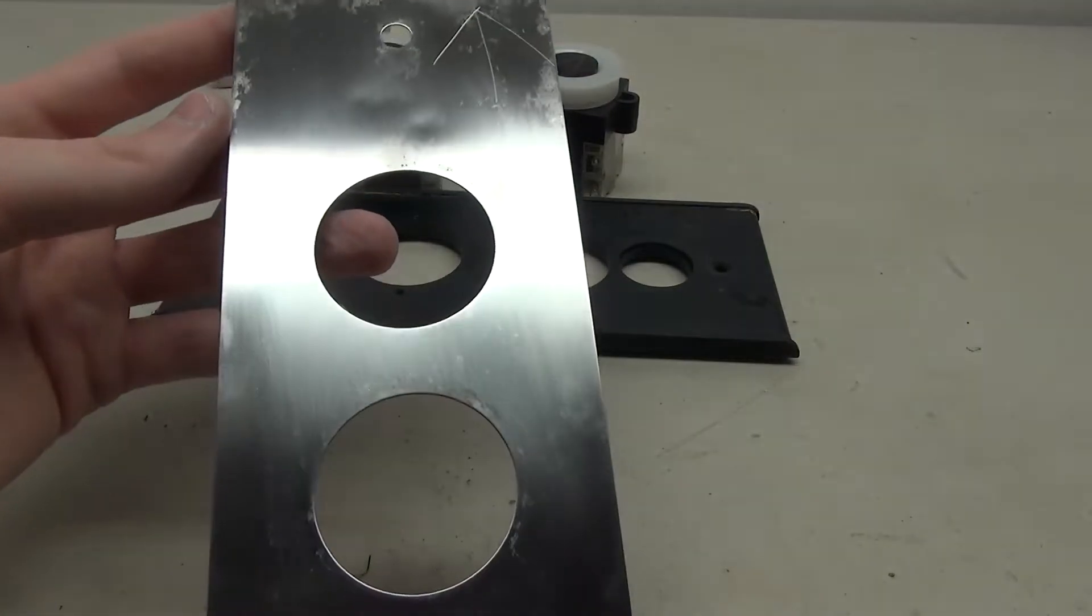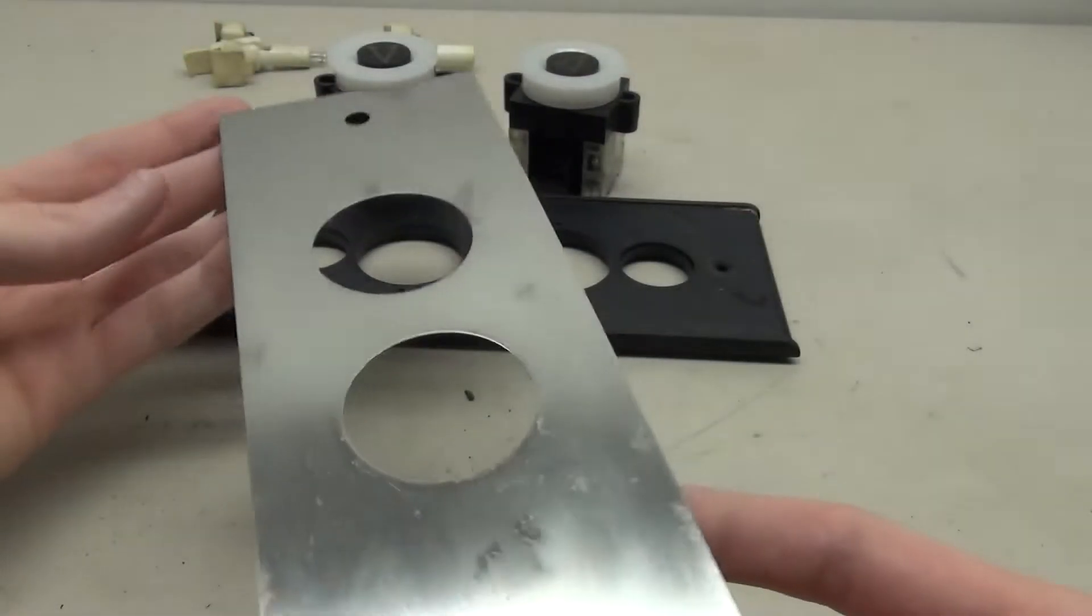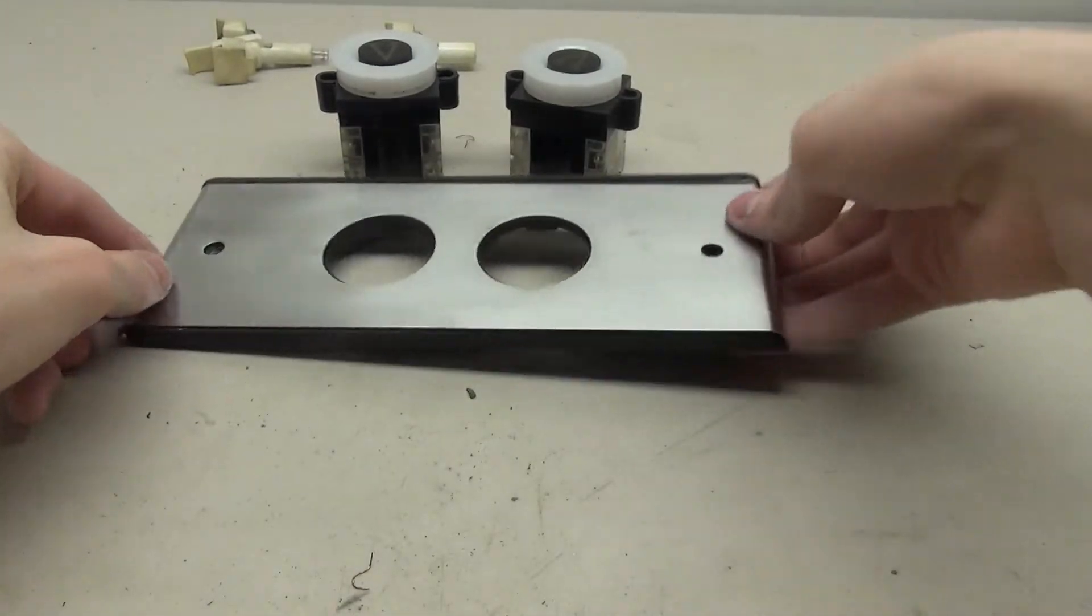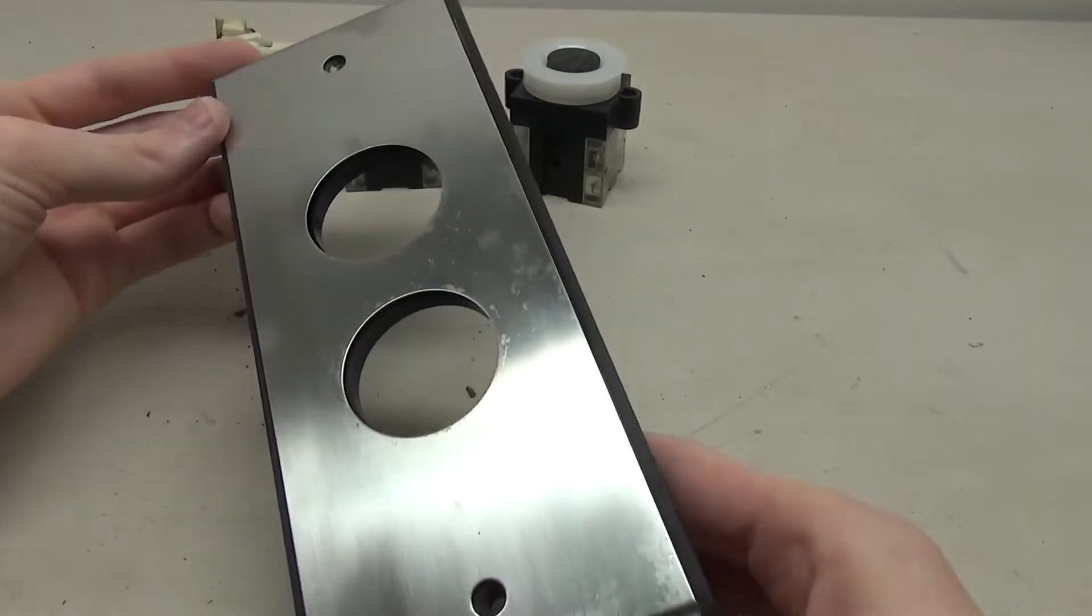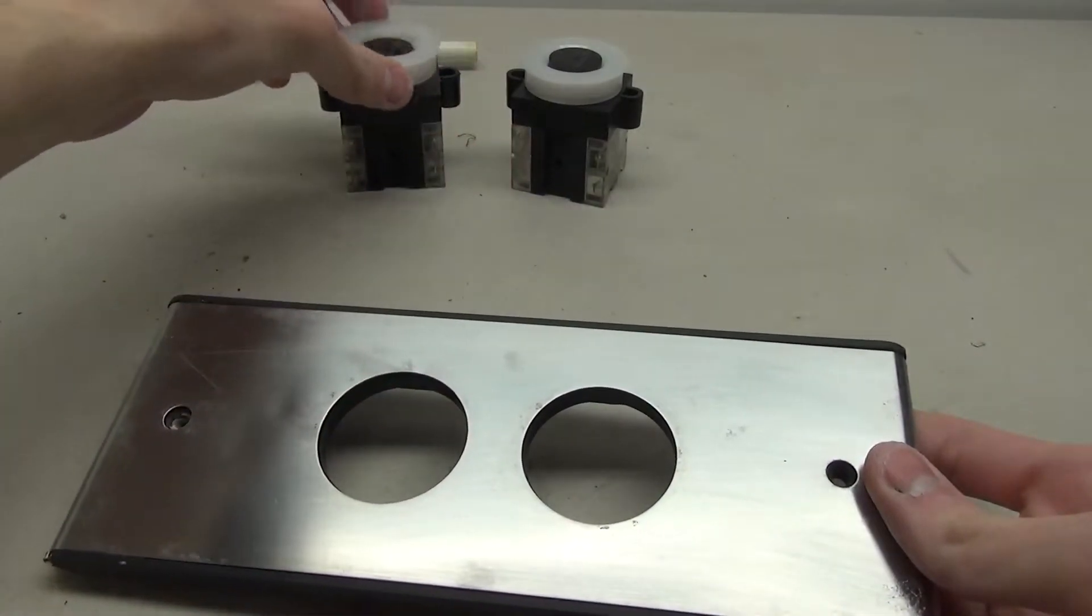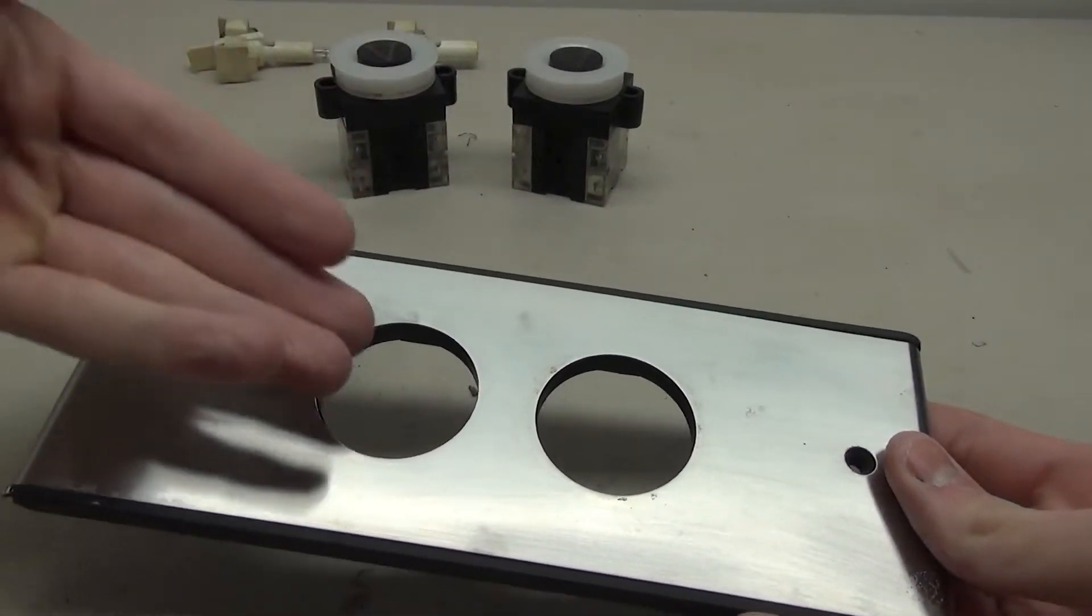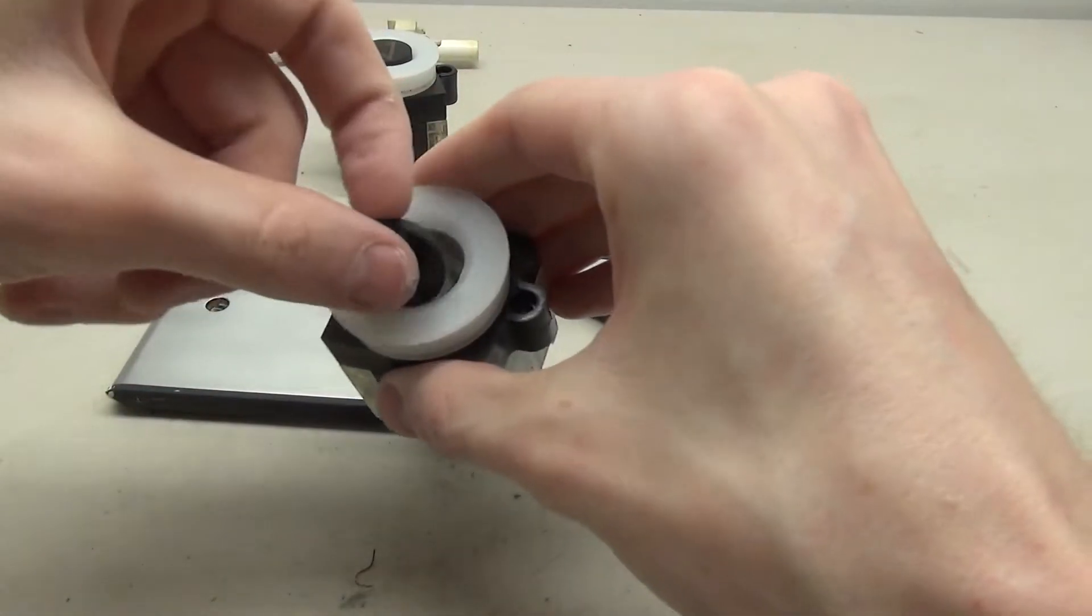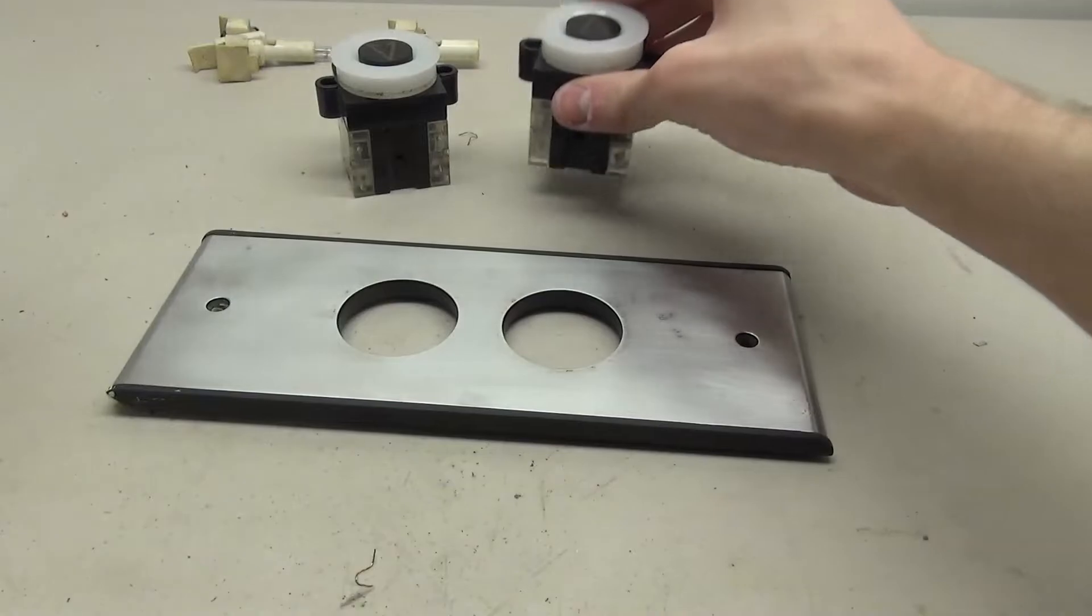And here we have the completed panel. You can see it looks a whole lot better than it did before. And now we can go ahead and put it on top of here, and we can start putting this whole thing together. Putting it together is fairly simple. We have to add these little rings, and then we have to screw the buttons into the back, which I'll have to get screws for. I still have to glue this piece back onto here, and then we've got to start wiring it up.